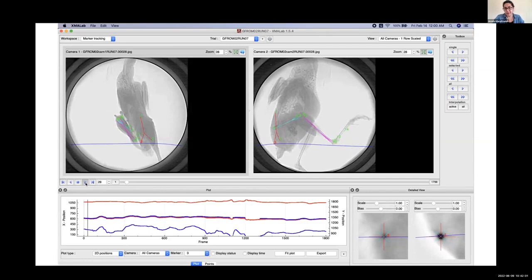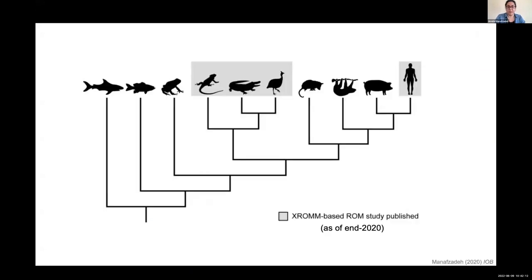XROMM yields biplanar X-ray videos where data analysis involves tracking individual radiopaque markers in the two views — this is incredibly time-consuming, especially for mobility work because of the sheer number of poses needed to get a good sense of full range of motion. Computer vision methods currently available just don't do this very well for mobility work because it's so acyclical, so it will involve quite a bit of manual tracking. By the end of 2020, only a limited set of taxonomic groups had been studied with XROMM mobility studies, so I'd really like to advocate for people already involved in XROMM to consider doing these mobility studies as well.